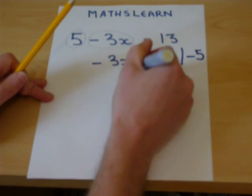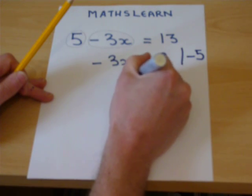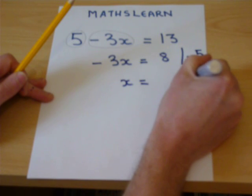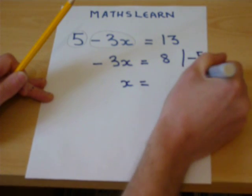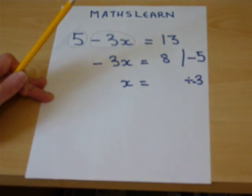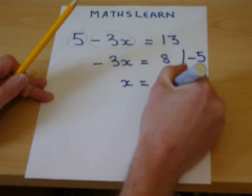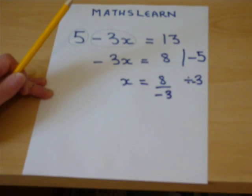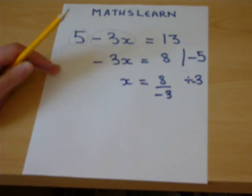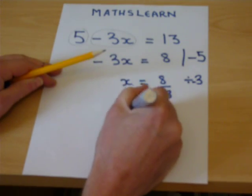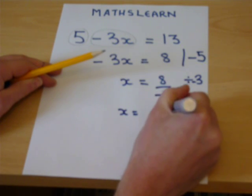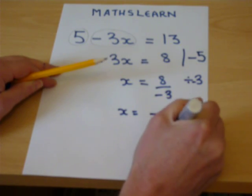If we then divide by the minus 3, we get x equals 8 divided by minus 3. It is generally the case that we write this solution as minus 8 thirds.